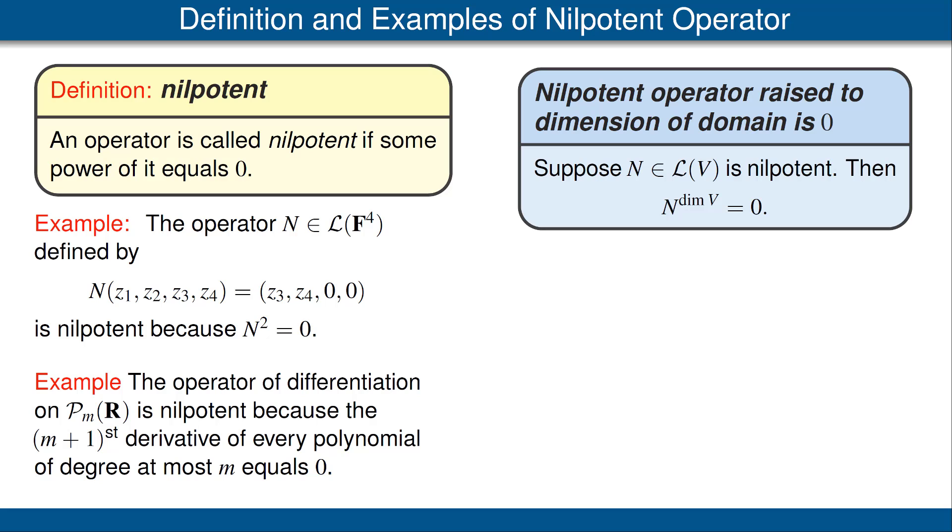The reason this is true is that being nilpotent means N to some power is equal to zero. Another way to phrase that is that the null space of N to some power is the whole vector space V.